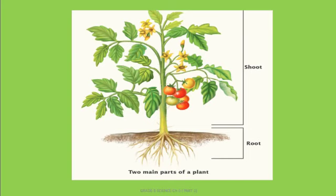So students, I hope you understood this much. The two main parts of a plant are root and shoot, and we have to study about the various functions of roots, stems, and leaves, which we will continue in our next lecture. Till then, you all take care. Bye bye, thank you.